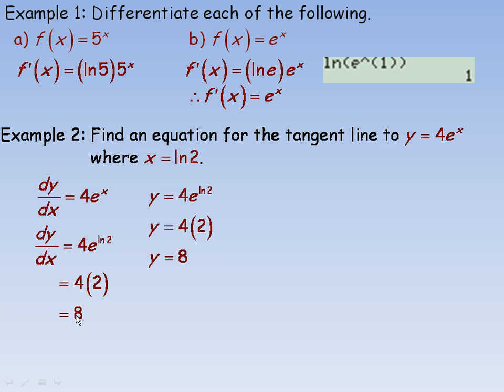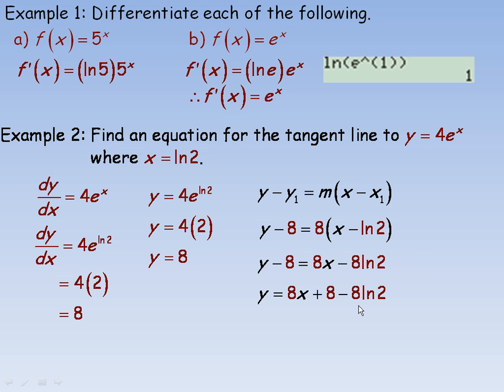So the derivative, the slope of the tangent line, is the same as the y coordinate. So in our point slope form we fill in 8 for m and y1 and ln of 2 for x1. And distributive rule, we just multiply those both by 8. And then I'll solve for y. I'll put it in y equals mx plus b form. So that's the equation of our tangent line.